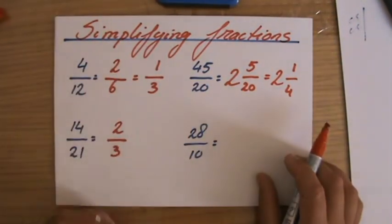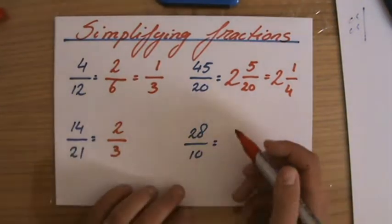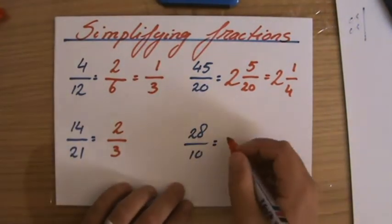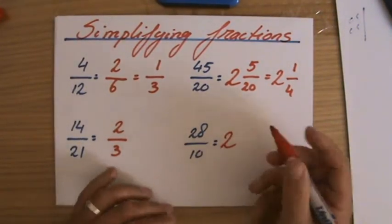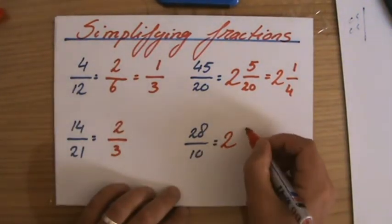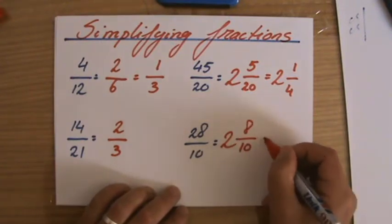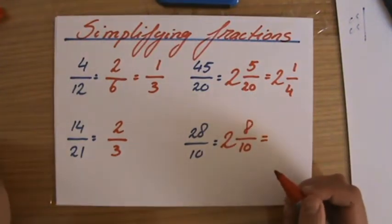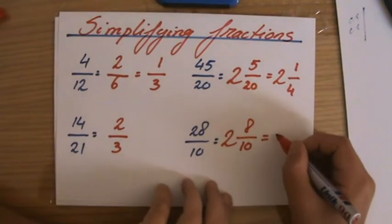Same here, 28 over 10. Top-heavy, improper fraction. 10 into 28. Also 2 wholes. And again, I explained this in previous videos in more detail. So 2 wholes, my remainder will be 8 over 10. And 8 over 10, I can divide both by 2 for instance.